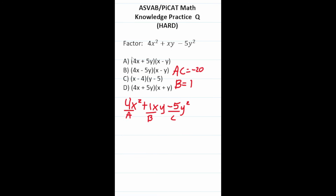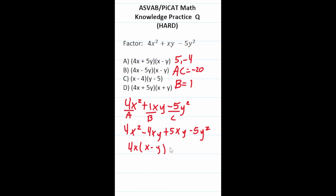This ASVAB PiCat practice question asks us to factor 4x squared plus xy minus 5y squared using the AC method. A times C is 4 times negative 5, which is negative 20. B is positive 1. We look for two numbers that multiply to negative 20 and add to positive 1: that's positive 5 and negative 4. Rewriting: 4x squared minus 4xy plus 5xy minus 5y squared. Factoring by grouping: 4x(x minus y) plus 5y(x minus y) gives (4x plus 5y)(x minus y), which is answer choice A.